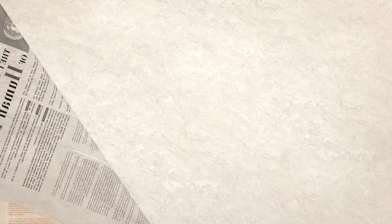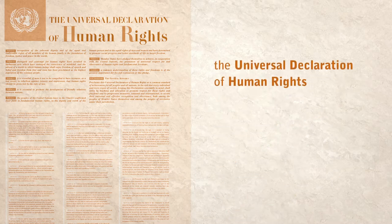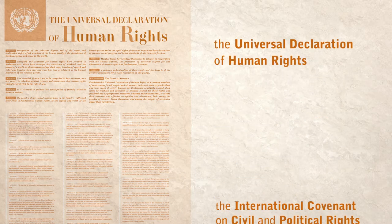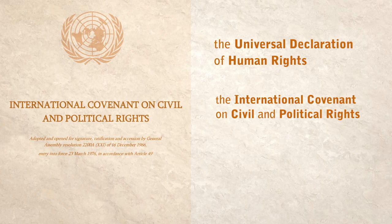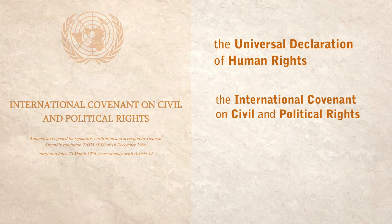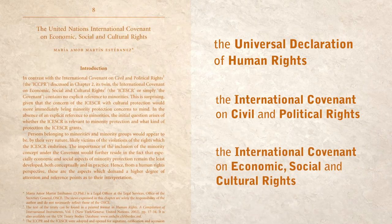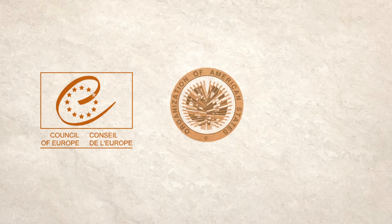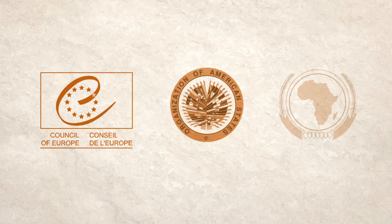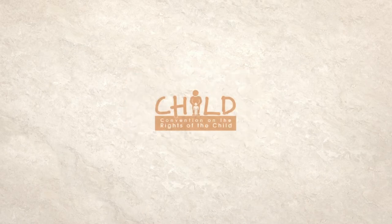The basis is the International Bill of Rights, which consists of the Universal Declaration of Human Rights, the International Covenant on Civil and Political Rights, and the International Covenant on Economic, Social and Cultural Rights. Other regional treaties adopted by the Council of Europe, the Organization of American States, and the African Union support this regime. Additional treaties deal with specific issues or groups, like the Convention Against Torture, the Refugee Convention, and the Convention on the Rights of the Child.